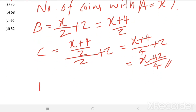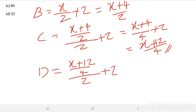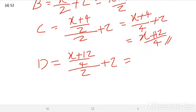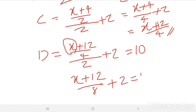Then C gives half of what he has plus two to D. Now D has a number of coins equal to the smallest two-digit number. The smallest two-digit number is 10. So from here, (X + 12) / 8 + 2 = 10.